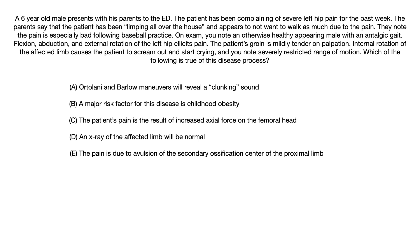A six-year-old male presents with his parents to the emergency department. The patient has been complaining of severe left-sided hip pain for the past week. The parents say that the patient has been limping all over the house and appears to not want to walk as much due to the pain. They note the pain is especially bad following baseball practice. On exam, you note an otherwise healthy appearing male with an antalgic gait. Flexion, abduction, and external rotation of the left hip elicits pain. The patient's groin is mildly tender on palpation. Internal rotation of the affected limb causes the patient to scream out and start crying, and you note severely restricted range of motion.